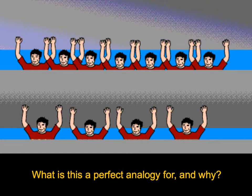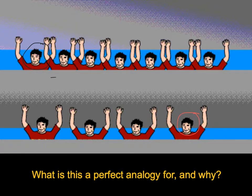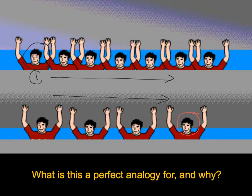This is normally an animation of a Mexican wave. I use this with my own classes and start off asking: what is this an analogy for, and why? It's a perfect analogy. If we take this guy here at the front - if he does a Mexican wave, stands up and raises his arms, and then everyone else does, we've transmitted that Mexican wave all the way down the row. But this guy in position one hasn't moved at all.